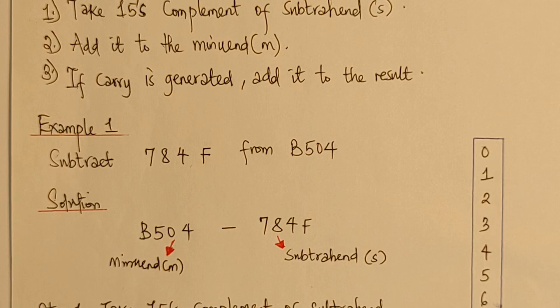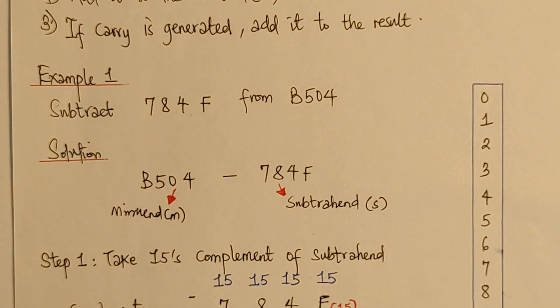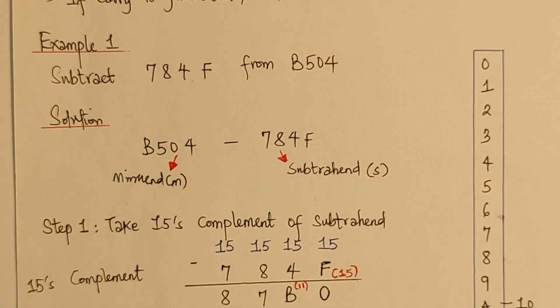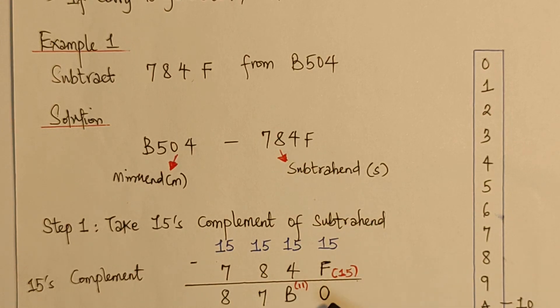So, the first one is to take 15's complement of subtrahend. Now, while spreading the value, we are going to apply 15, 15, 15, 15 for each of the digits in order to get the 15's complement. So, while we do that, we are going to say 15 minus F, now this F is 15, it will give us 0.